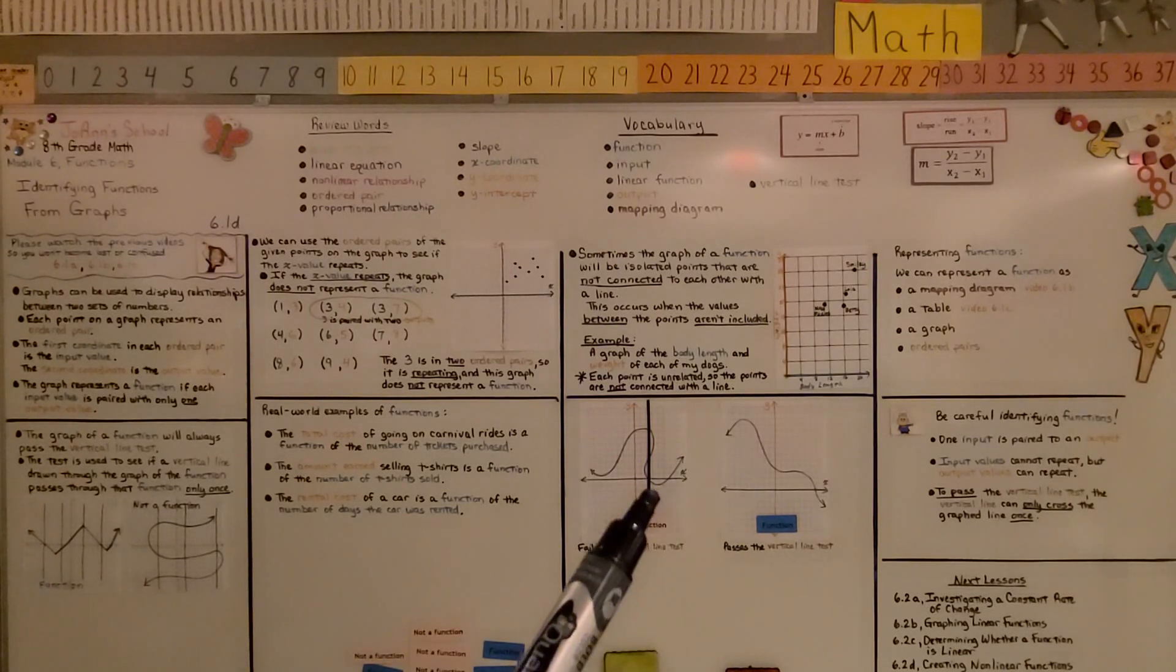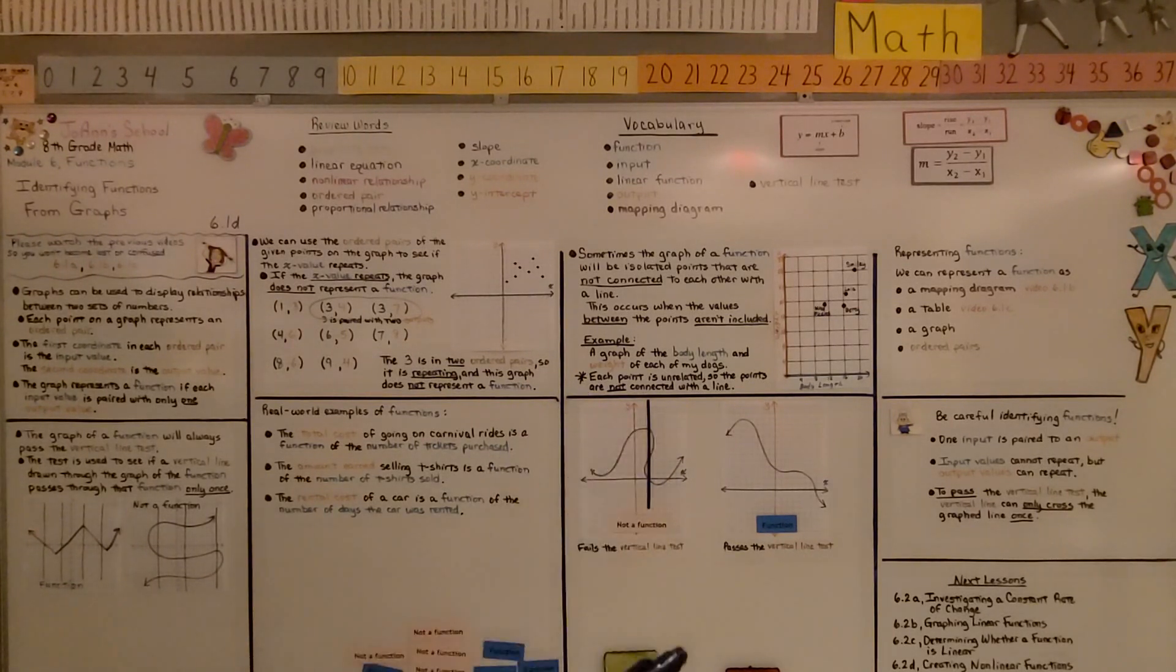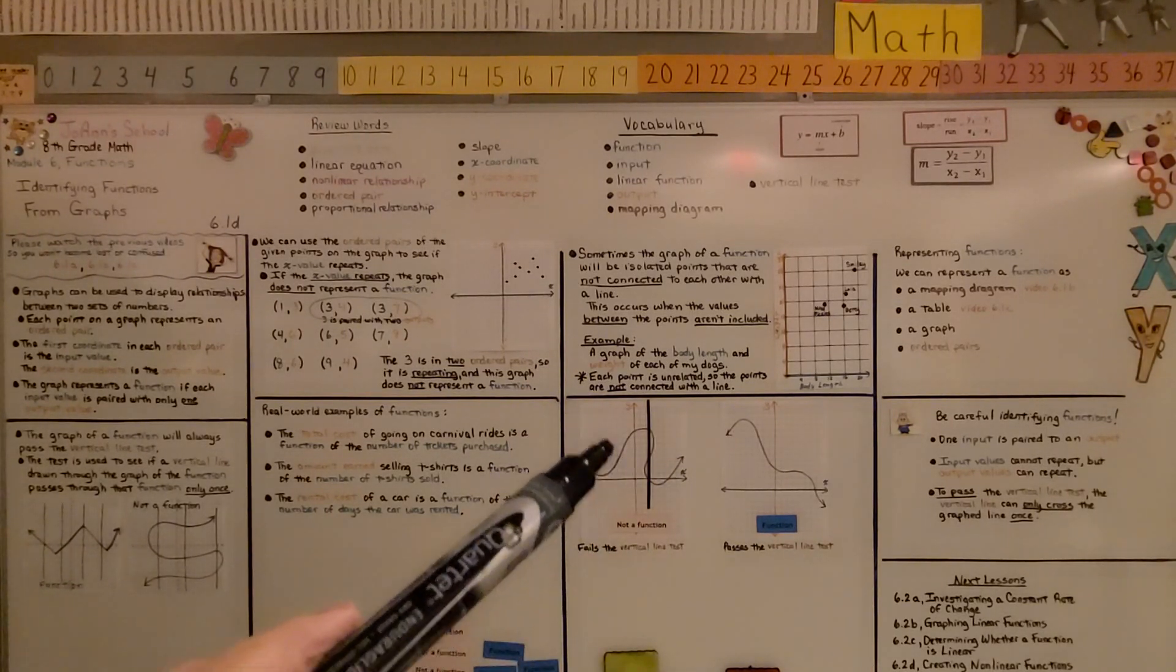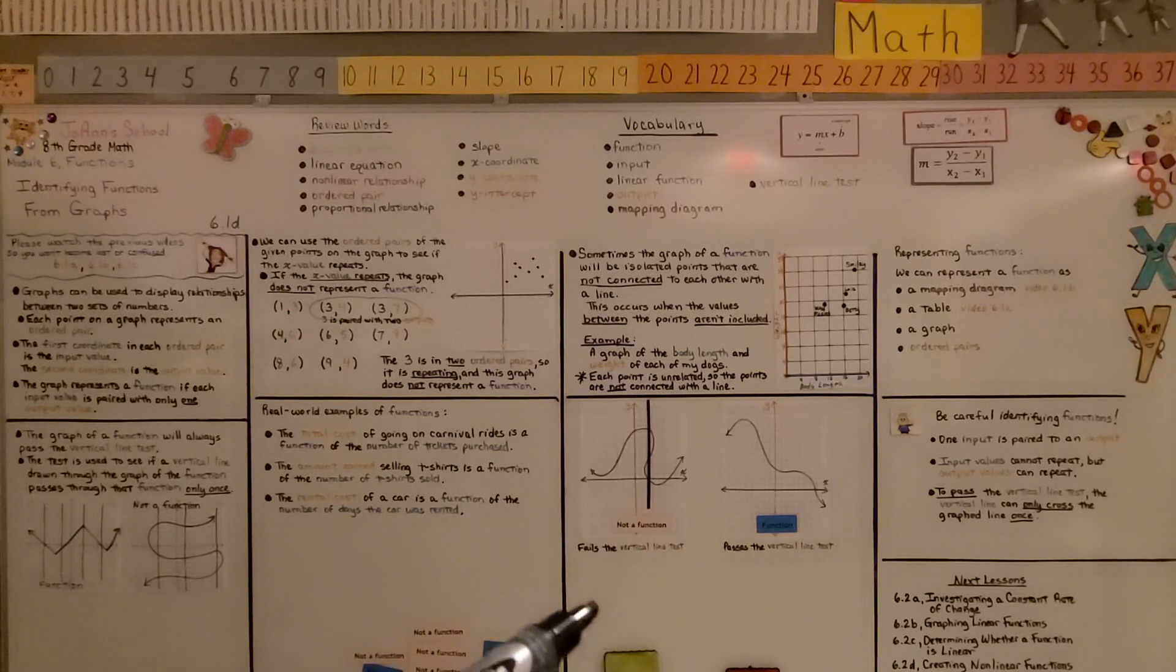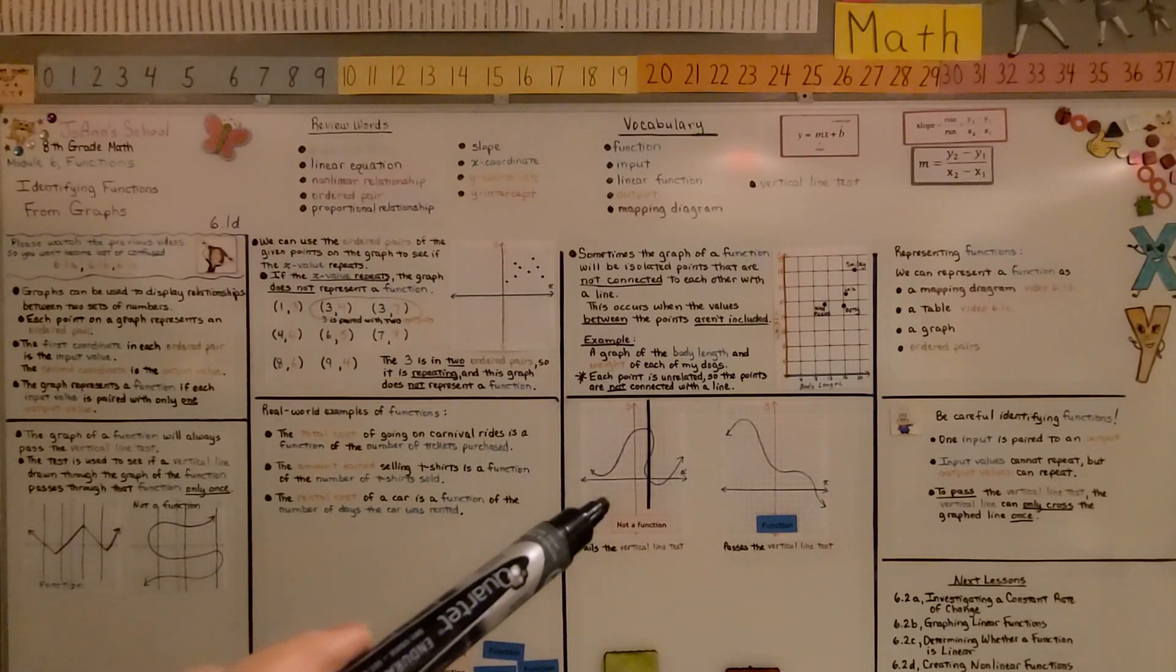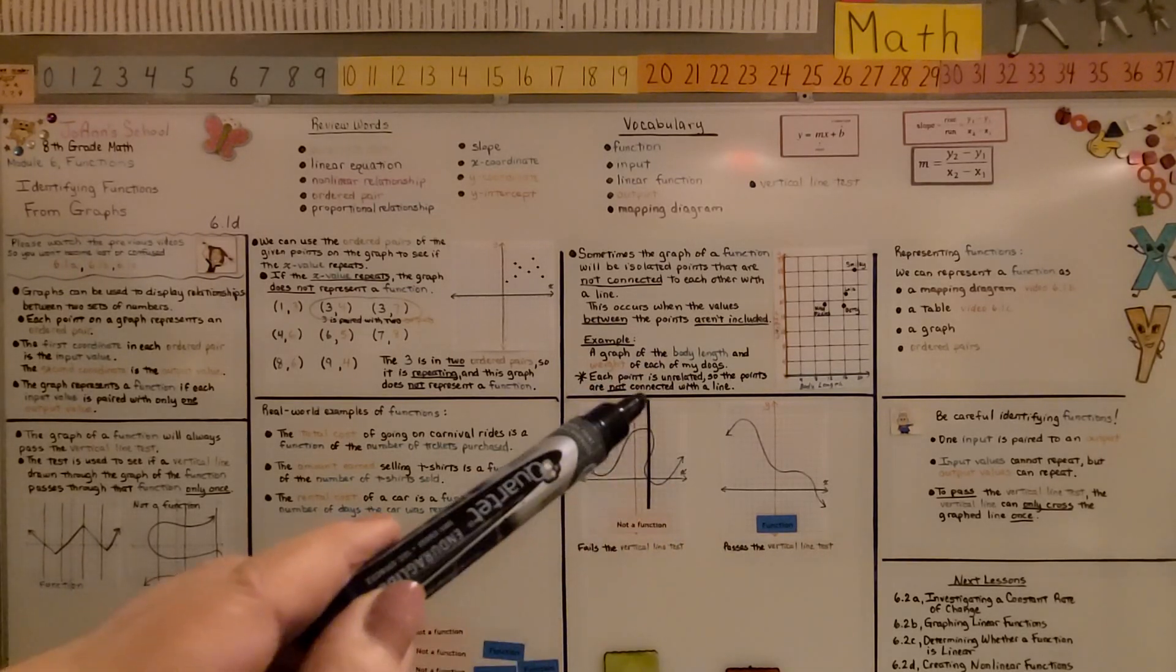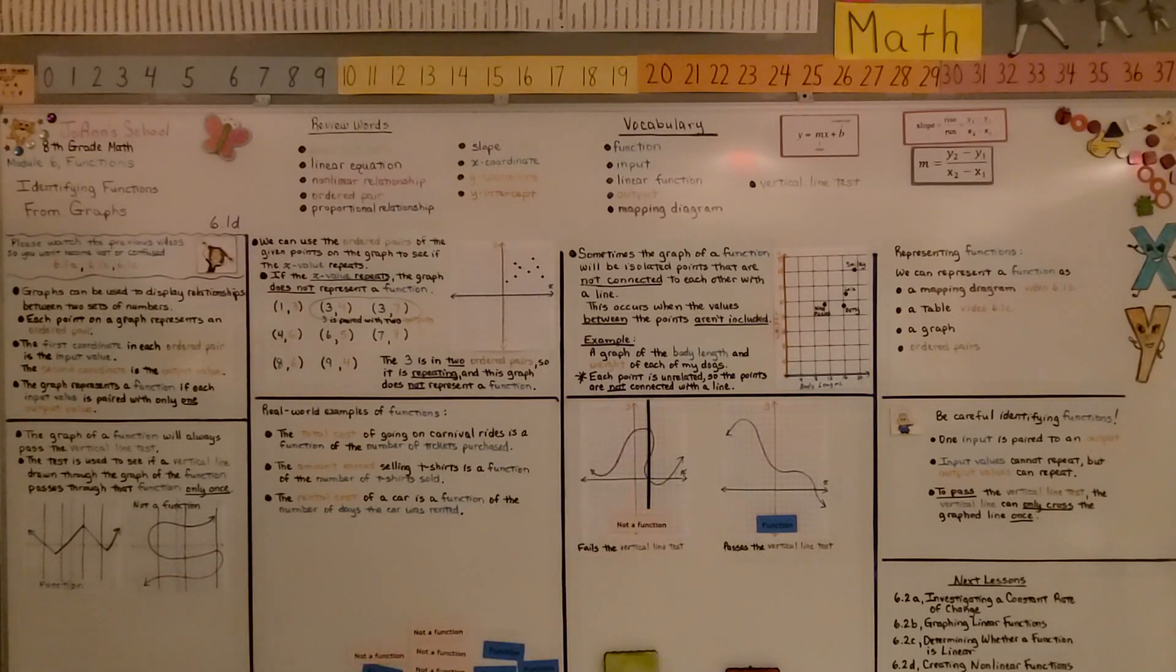Remember when doing the vertical line test, whether you use a line like I did and just move it, or you draw pencil lines through the graph to see if it works, you want to do it in several locations. Like in this instance, we could have just done it here and it would have looked like it would have passed. We needed to draw several lines to see if it would repeat for that x value. Have a wonderful day. Join me for 6.2. See you. Bye.